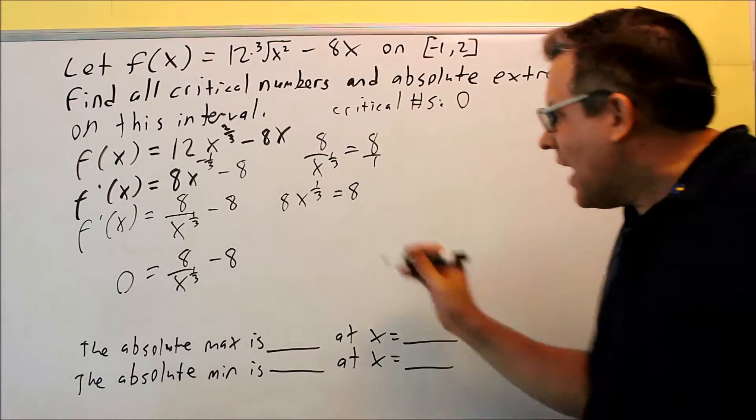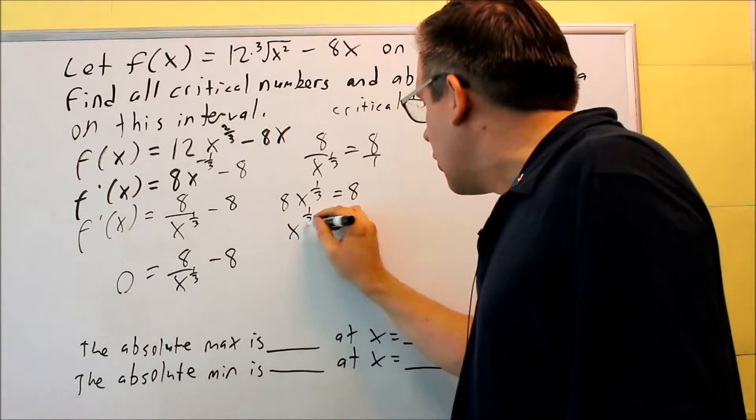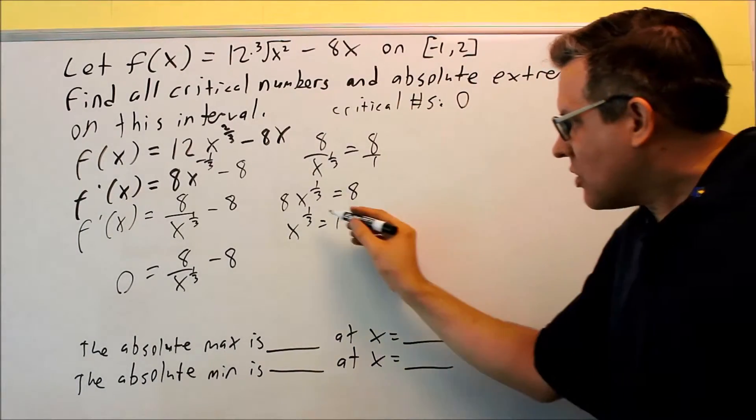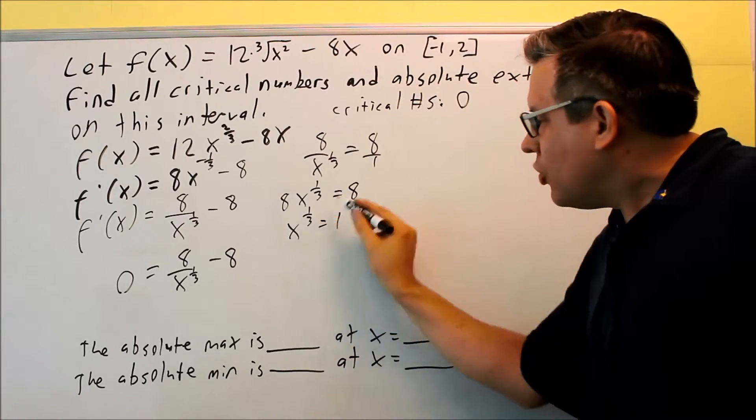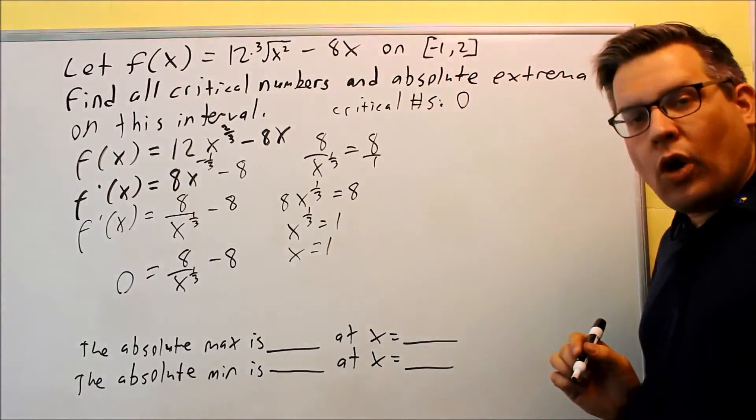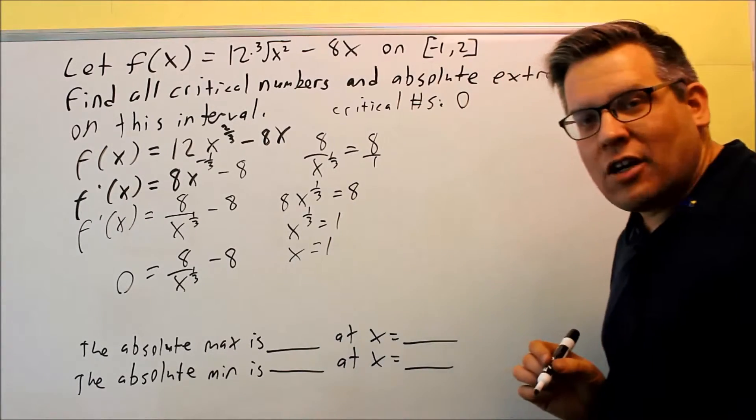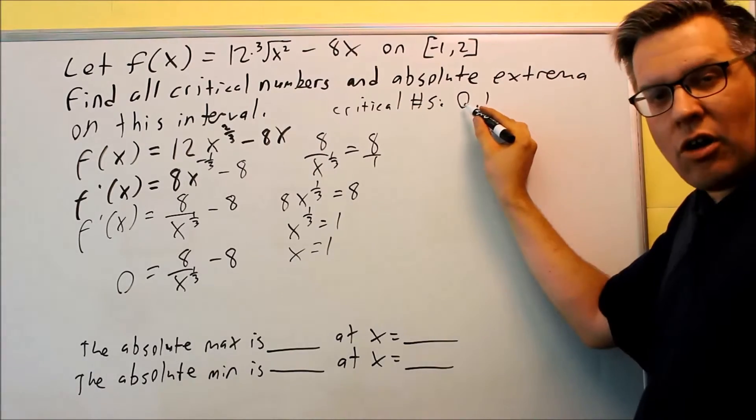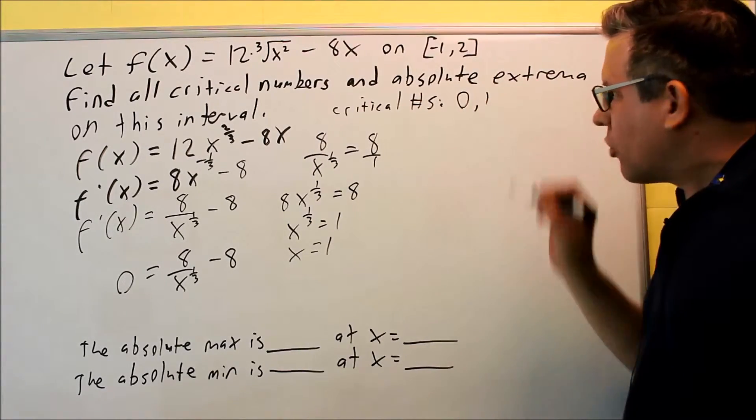Divide both sides by 8, I'll get x^(1/3) equals 1. You would cube both sides because this is a 1/3. If you cube it, you'll be able to get rid of that power, and you'll get x is equal to 1. That's the only other value that I find here. So now my critical numbers are both 0 and 1.